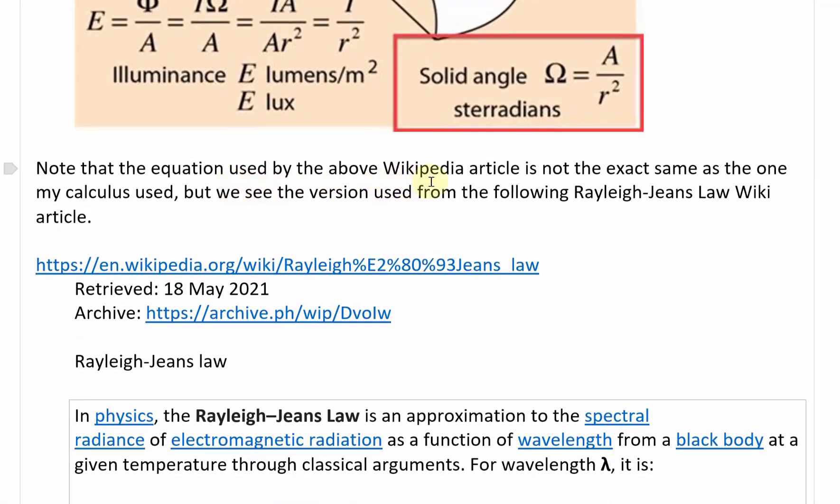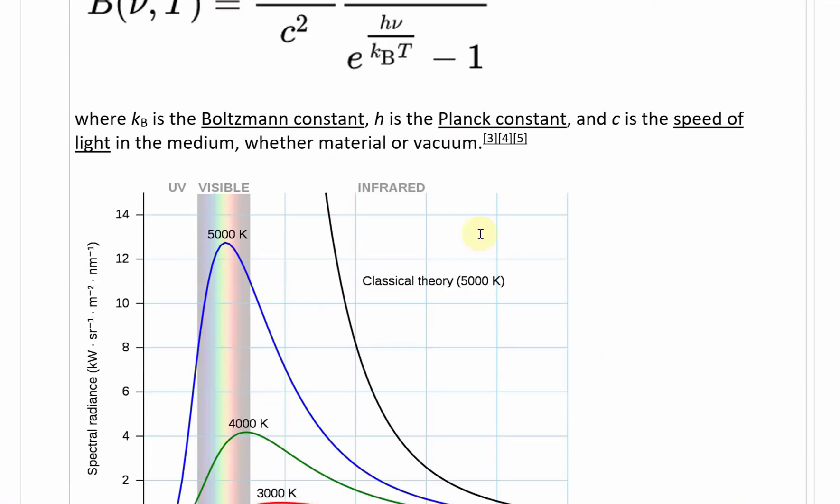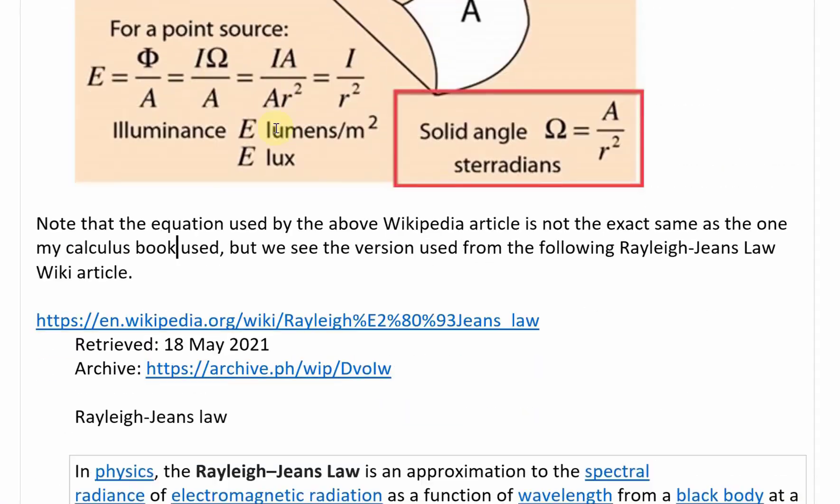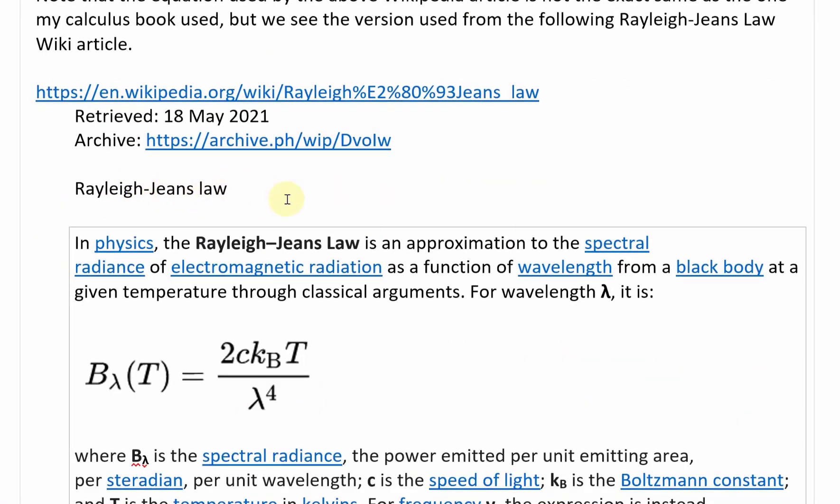Note that the equation used by the above Wikipedia article is not the exact same one as the one my calculus book used, but we see the version used from the following Rayleigh-Jeans article. This one doesn't have the 8π in there, and we'll get to that in a bit. Going through the Rayleigh-Jeans law from Wikipedia, this one states...